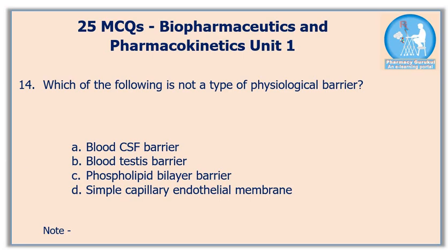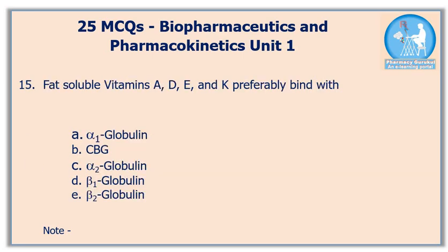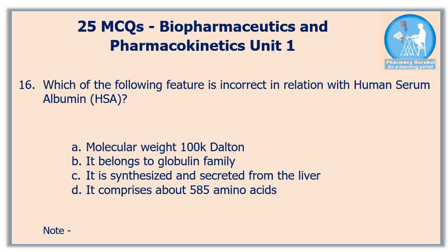Question number fourteen: which of the following is not a type of physiological barrier? The correct answer is option C, phospholipid bilayer barrier. Question number fifteen: fat-soluble vitamins A, D, E, and K preferably bind with — the correct answer is option C, alpha-2 globulin.